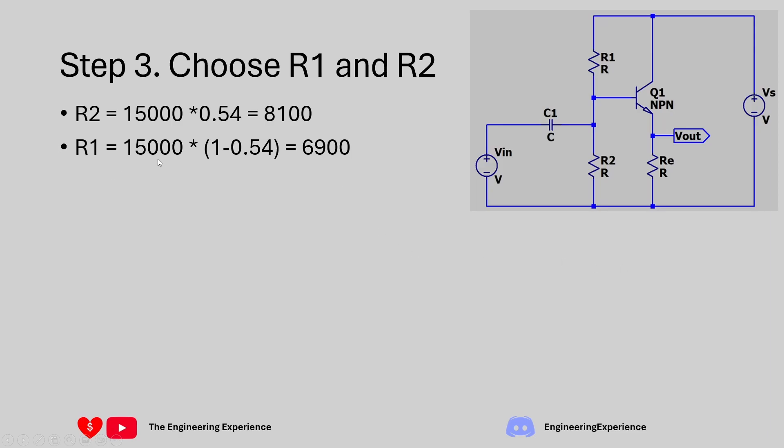We can do 15,000 minus 8100 or we can do 15,000 times 1 minus 0.54 which is the remainder from the normalized total resistance. That gives us an R1 value of 6900 ohms.